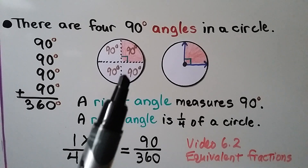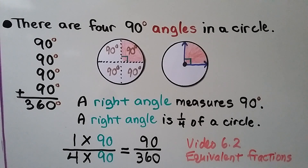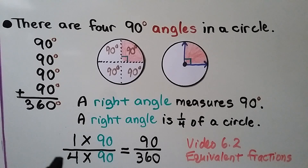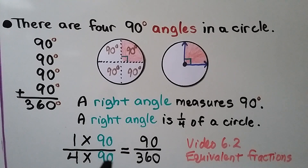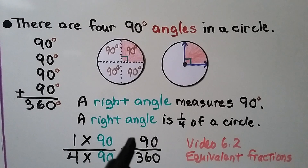A right angle measures 90 degrees. A right angle is 1/4 of a circle — it's 1 of 4 parts of the circle. We can write an equivalent fraction: 1/4, multiplying the numerator and denominator by the same amount. 1 times 90 is 90, and 4 times 90 is 360. We can see that 1/4 is equal to 90/360ths, meaning the numerator is 90 degrees.